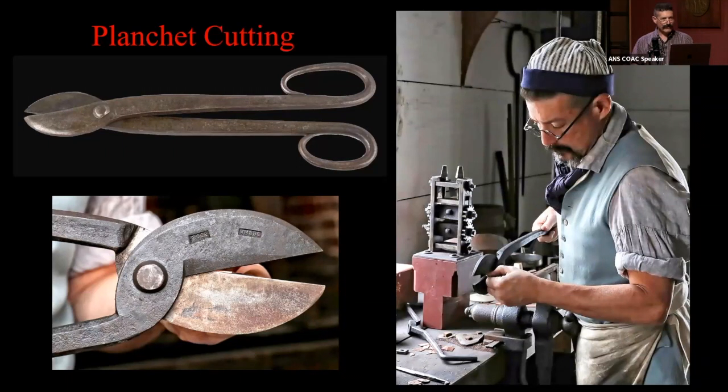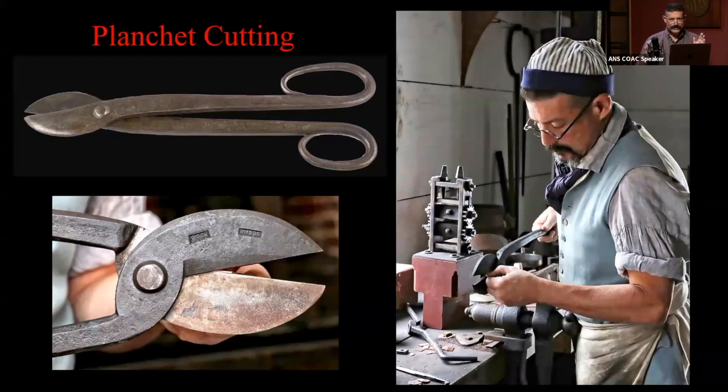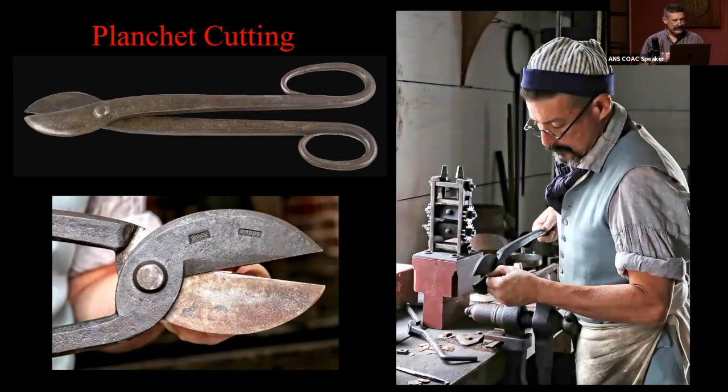I think then at that point, the planchets were weighed. They were adjusted again with a similar set of shears and some minor cutting to get them into the right ballpark. Then they were struck. So when you look at these coins, you see all these very irregular faceted edges, but you don't see the burrs.